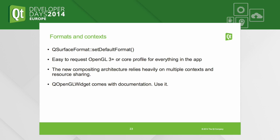In 5.4, we didn't leave the surface format behind — it has a new addition: setDefaultFormat. This is a static function, and it's probably a great relief to those doing desktop applications using modern OpenGL with core profiles. You can now request the OpenGL version once at the beginning of the application in your main function and forget about it — every context, window, widget, Quick window, and widget will use that format, unless you set a format explicitly for that instance. It really reduces the amount of code you need to write.